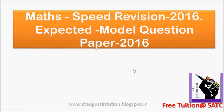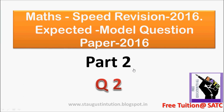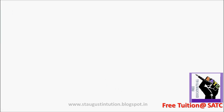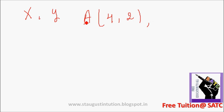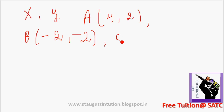This is part 2, question number 2. Draw x and y. A: (4, 2). B: (-2, -2). C: (4, -3). This is question number 2. Okay.